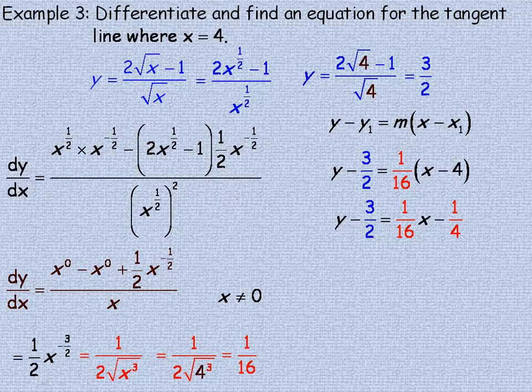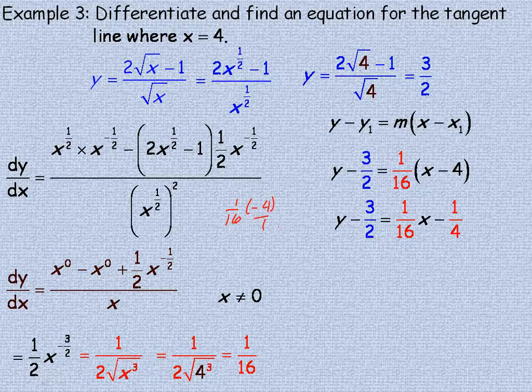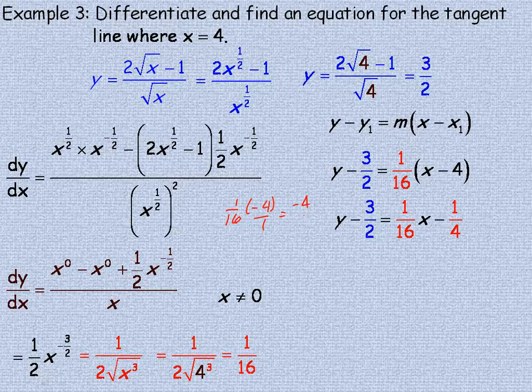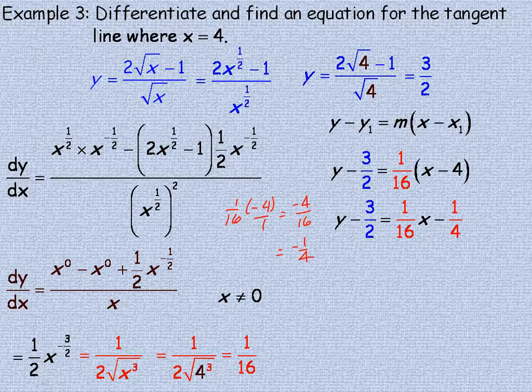We've got 1/16 times negative 4. Of course that's the same as negative 4 over 1. So multiplying the numerators, you get negative 4 on the top, and 16 times 1 is 16 on the bottom. And that will reduce to negative 1 quarter. So that's where the negative 1 quarter comes from.